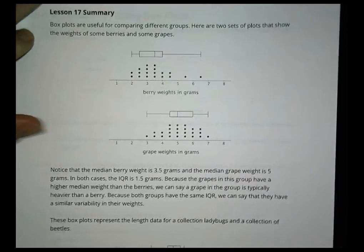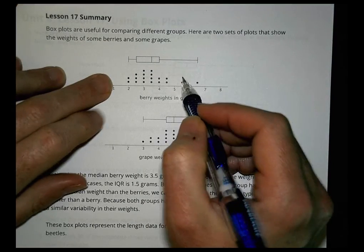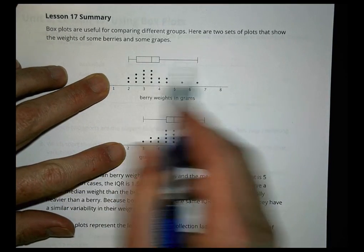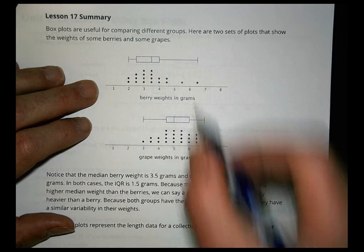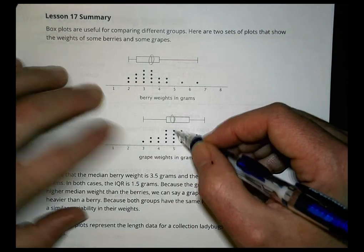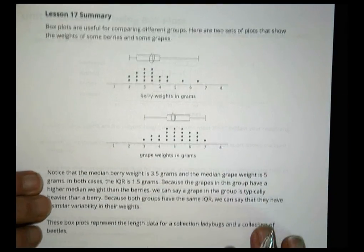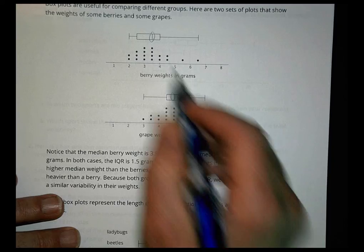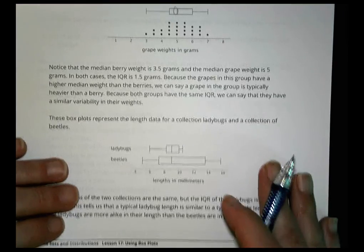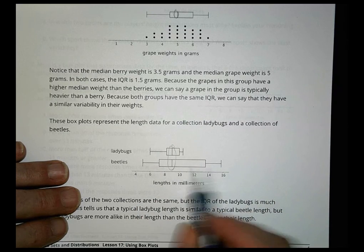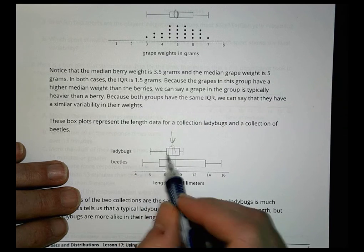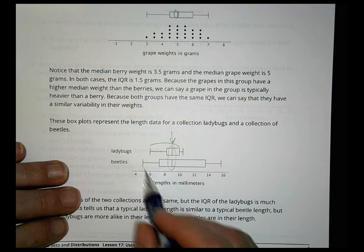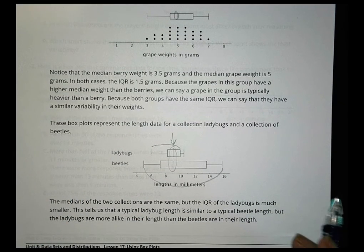So looking at your summary for today, box plots are useful for comparing different groups. And then we can see here is a box plot for berry weights and grape weights. We can see they have a similar IQR. They look very similar in terms of how they're spread out. But we can tell the medians here and here that the grapes overall seem to weigh more than the berry weights there. So sometimes when the IQRs are the same, we can look at the median and get a feel for what's going on. Other times we can have the similar median, but the IQRs talks about the variance here in the weights. While the median length of ladybugs and beetles are the same, we can see there's less variance in ladybugs and a whole lot of variety in the beetles there.